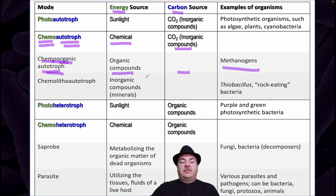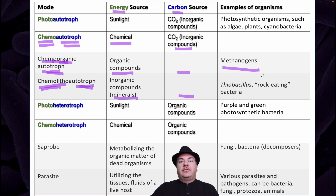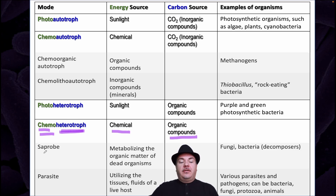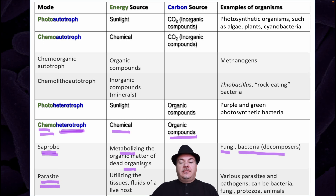An example of a chemoorganic autotroph is methanogens, and an example of a chemolithoautotroph is Thiobacillus, called rock-eating bacteria. Chemoheterotrophs get energy from chemicals and carbon from organic compounds. These can be broken down into saprobes and parasites. Saprobes metabolize the organic matter of dead organisms — examples are fungi and decomposing bacteria. Parasites get their energy from the tissues and fluids of a living host and also get carbon from organic compounds — examples include various parasites and pathogens, which can be bacteria, fungi, protozoa, or animals.